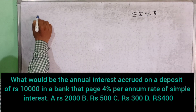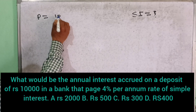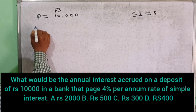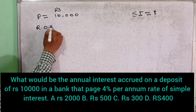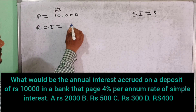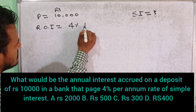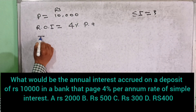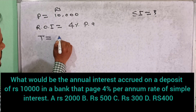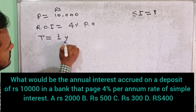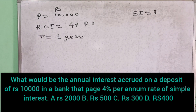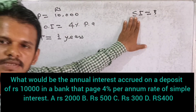The principal given here is Rs. 10,000, and the rate of interest is 4% per annum. Time is mentioned as annual, meaning one year. We need to find what is the simple interest.